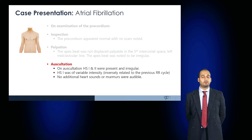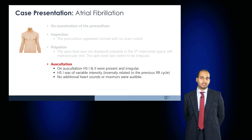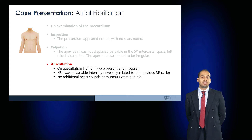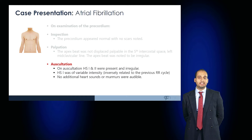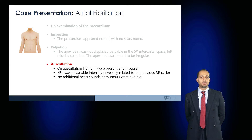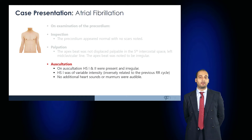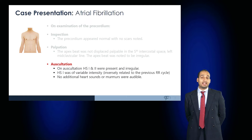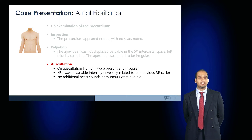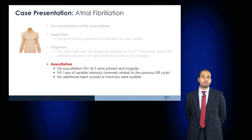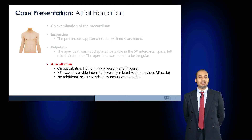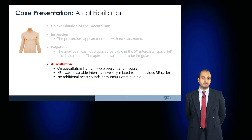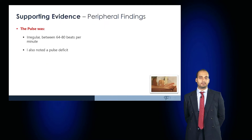S1 corresponds to the closure of the mitral and tricuspid valves and would have variable intensity. The intensity is inversely proportional to the RR interval, meaning that the faster the heart rate, the louder the sound, and the quieter the sound with a slow heart rate. No additional heart sounds or murmurs would be audible.